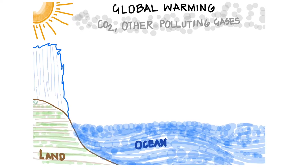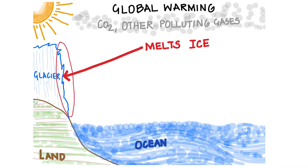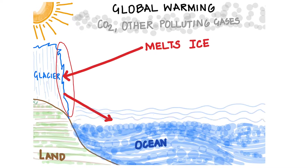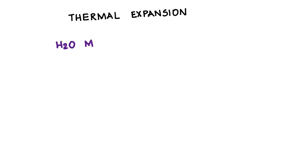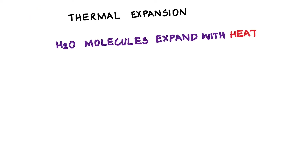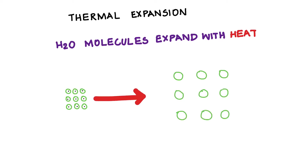As we saw in our experiment, when the ice and runoff flows into water, it raises the level of the oceans. Global warming can also heat up ocean water. As we saw in our experiment, heating water causes thermal expansion — this is when water molecules become more active and take up more space or volume, so the overall level of the water rises.